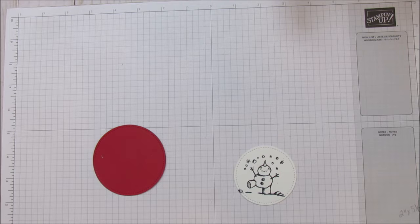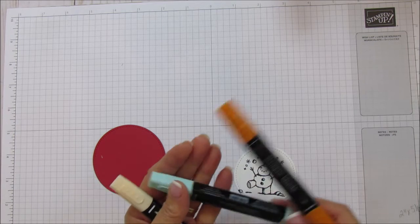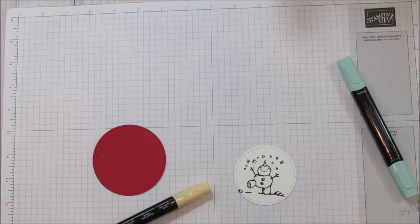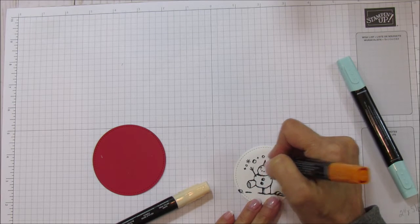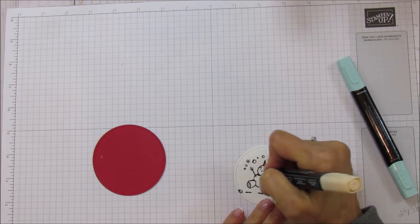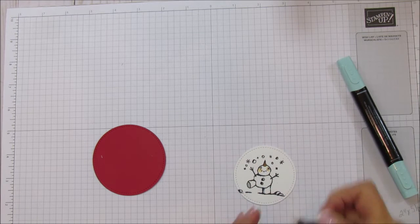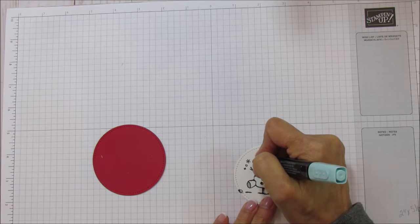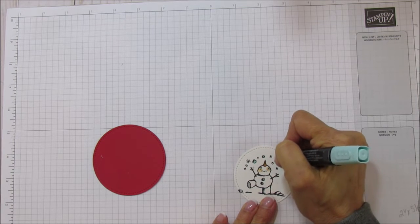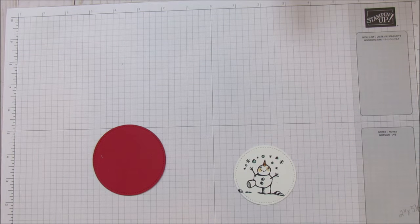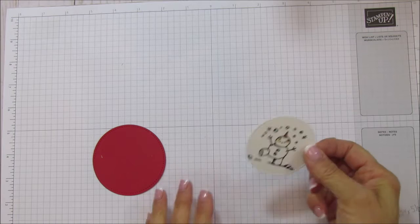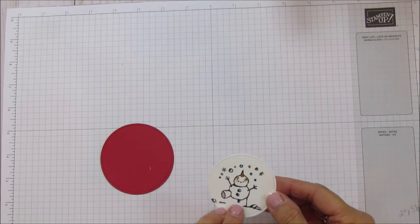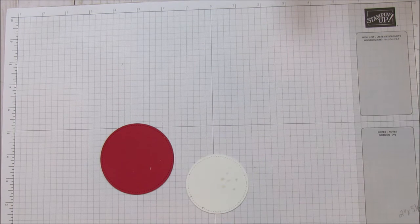Let's go ahead and color him. I'm just using pumpkin pie, pool party, dark pool party, and then dark petal pink. So we're just coloring his nose, we're going to give him some cheeks, and then we're just going to color the snow. On the other card, I used a regular one of our layering circles, but I thought this time I would try the stitched one on it. This one's a little bit smaller, so it cut off a little bit, but it's okay, it still looks really cute.